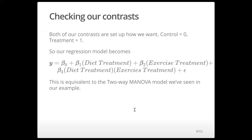In each case, the betas are actually vectors of betas, but diet treatment and exercise treatment are just scalars — they're just ones or zeros. And of course, Y is a vector of well-being and sleep quality.